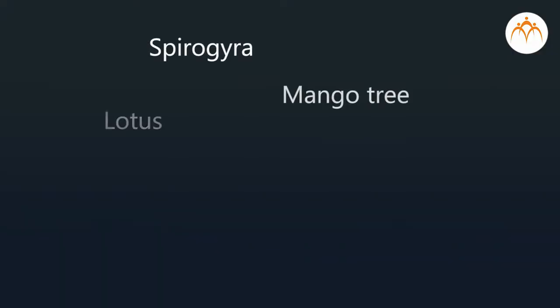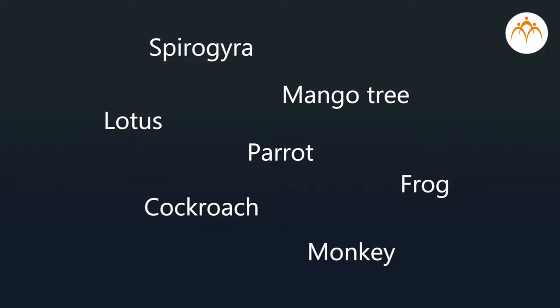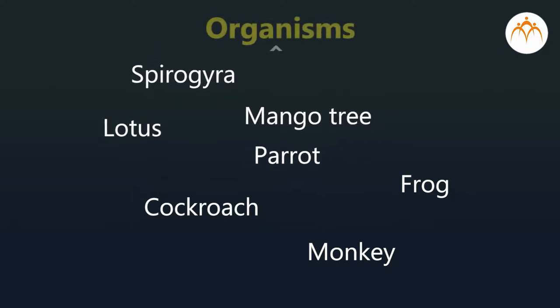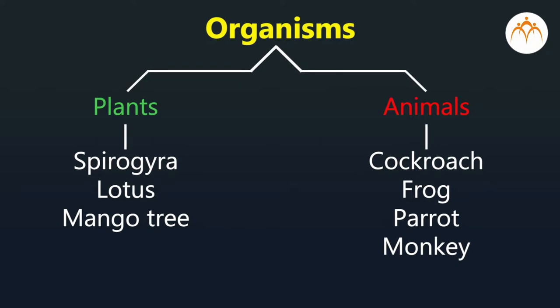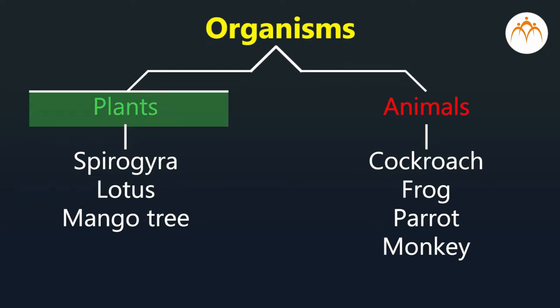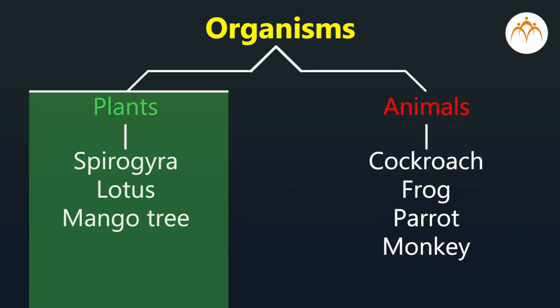Just imagine if such sections are not made — there will be chaos in the mall. Now let's apply the same logic for organisms. Their grouping is necessary, otherwise it will be chaos making our task difficult. We will group organisms from the following list. Can you place them in two groups based on the food they eat and locomotion?